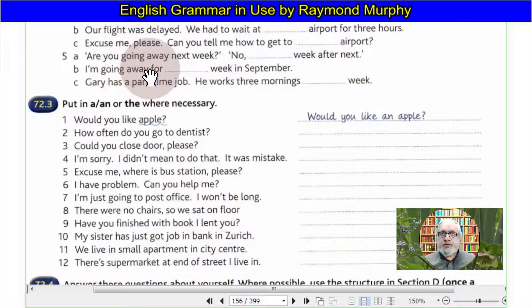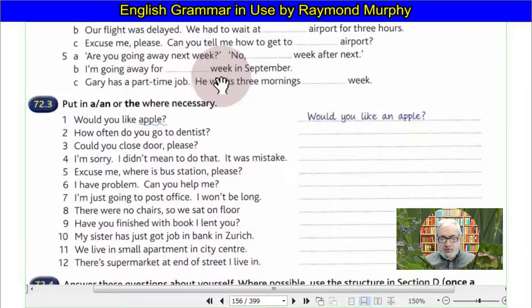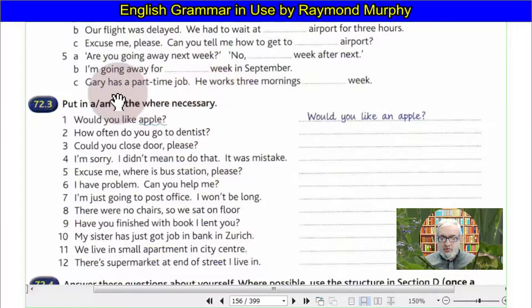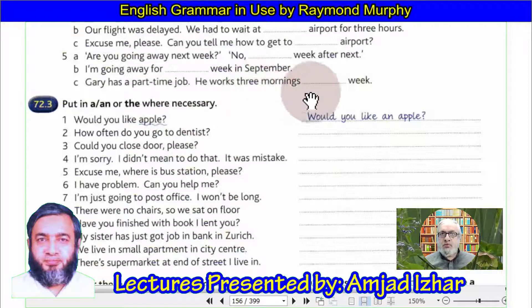'Are you going away next week?' 'No, the week after next.' 'I'm going away for a week in September.' Gary has a part-time job — he works three mornings a week.